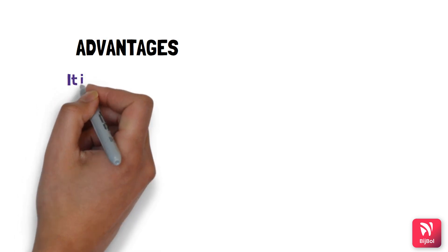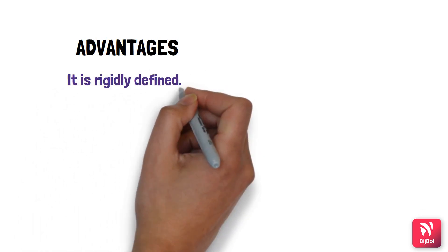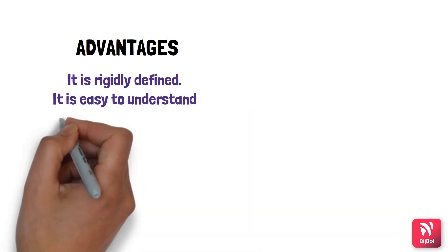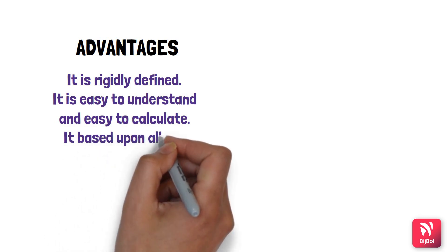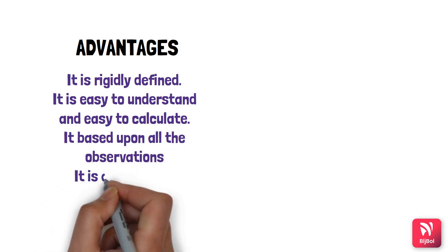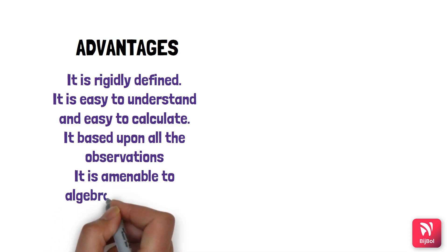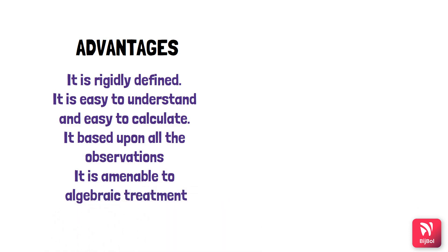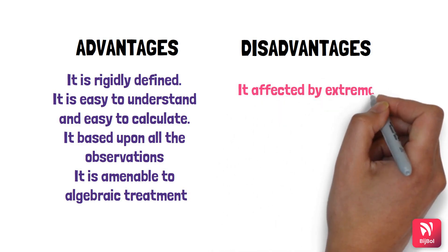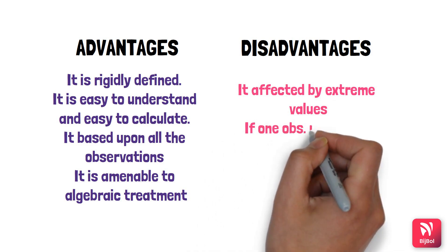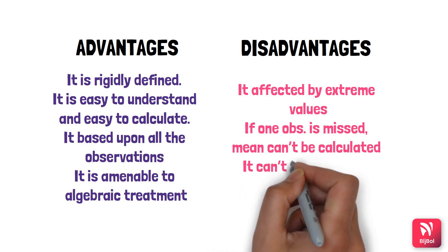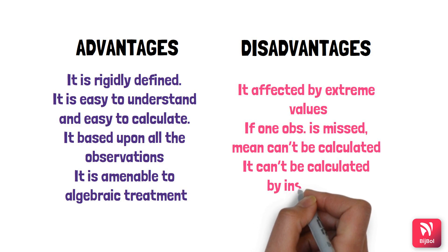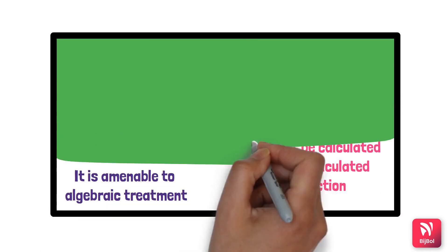The advantages of mean are that it is rigidly defined, easy to understand, and easy to calculate. It is based upon all observations and is amenable to algebraic treatment. The disadvantages are that it is affected by extreme values — for example, values of 2, 4, 6, 8 and suddenly 2000 will drastically change the average. If one observation is missed, you cannot calculate the mean, and it cannot be determined by inspection.